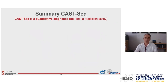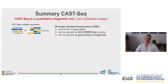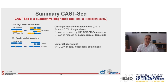To summarize what our CAST-seq assay can do: it is a quantitative diagnostic tool, not a prediction assay. It is applied directly to the cells that go to the patient. We find off-target mediated translocations in up to 0.5% of cells, which can be reduced by using high-fidelity CRISPR-Cas systems and by good choice of target site. We find on-target aberrations — large deletions and inversions — in 10 to 20% of cells, independent of the target site. This is something we have to be aware of when applying genome editing in stem cells.